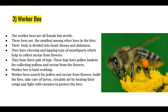Worker bees are the smallest bees. They are actually female but sterile. Though smallest, their population is maximum in the beehive. Their body is divided into head, thorax, and abdomen, and they have three pairs of jointed legs with a special pollen basket used for collecting pollen grains and nectar. Their functions include sourcing pollen and nectar from flowers, building the hive, taking care of larvae, circulating air by beating wings in summer, and fighting enemies to protect the hive.